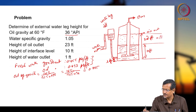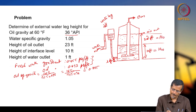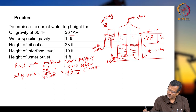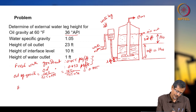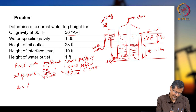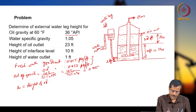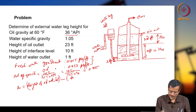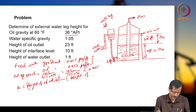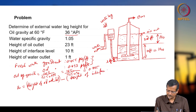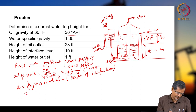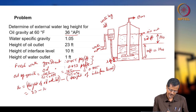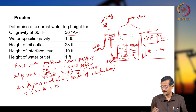Calculate HO: height of oil outlet minus height of interface = 23 minus 10 = 13 feet. So HO = 13 feet.